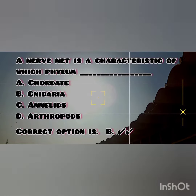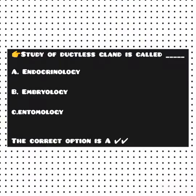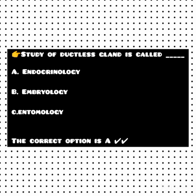Next: a nerve net is a characteristic of which phylum? The options are Chordata, Cnidaria, Annelids, and Arthropods. The correct option is B — Cnidaria. Next: study of ductless glands is called what? The options are endocrinology, embryology, and entomology. The correct option is A — that is endocrinology.